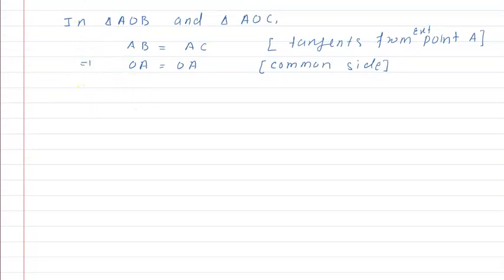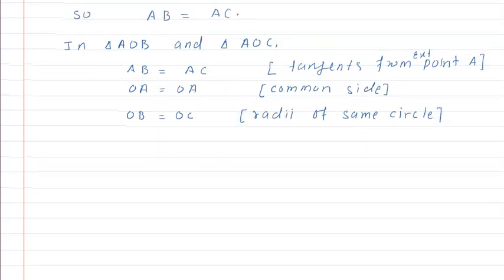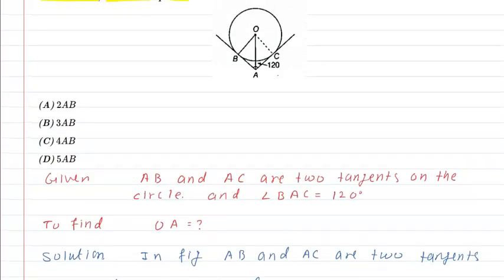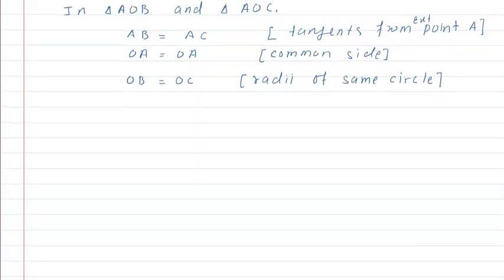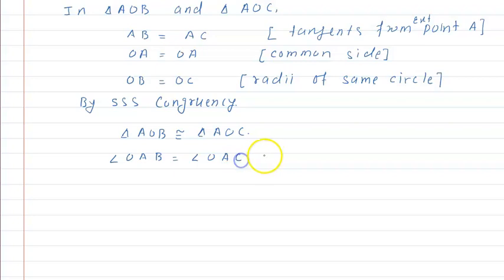OB is equal to OC — radius of same circle. तो दोनों triangles में corresponding sides equal दिखा दिया, तो by SSS congruency, triangle AOB is congruent to triangle AOC. Therefore, angle OAB is equal to angle OAC by CPCT.